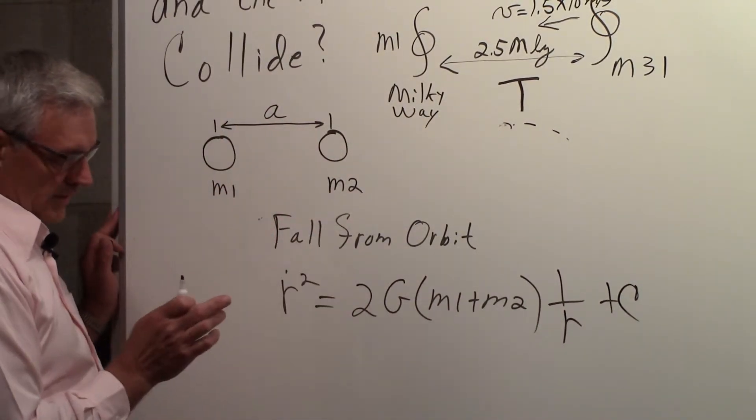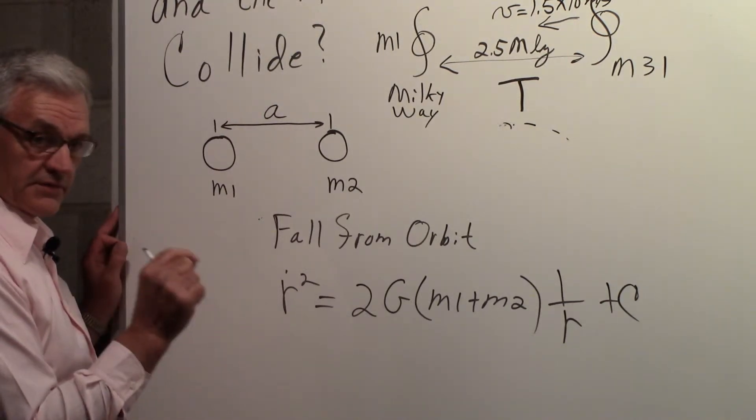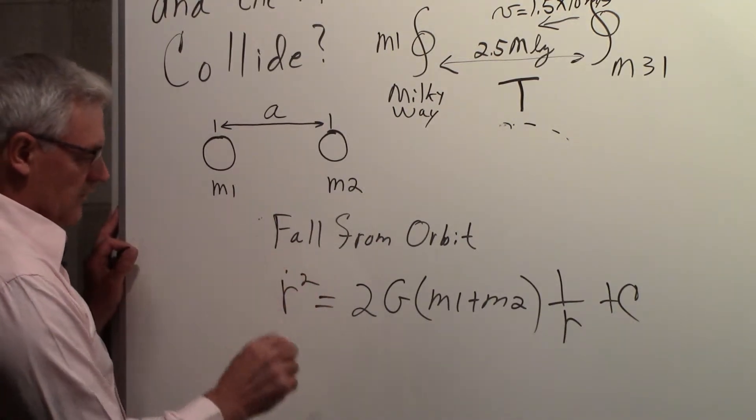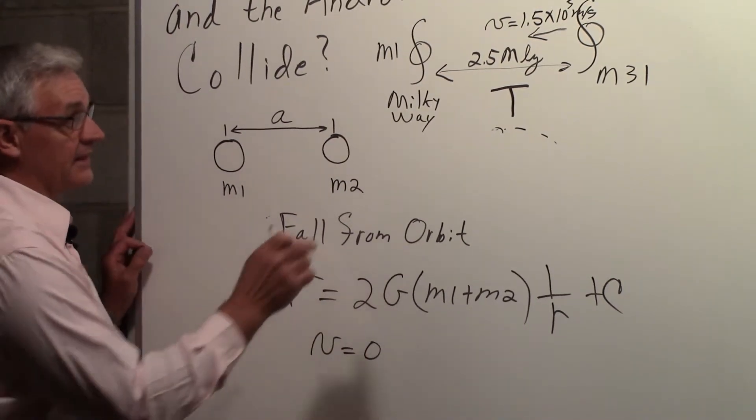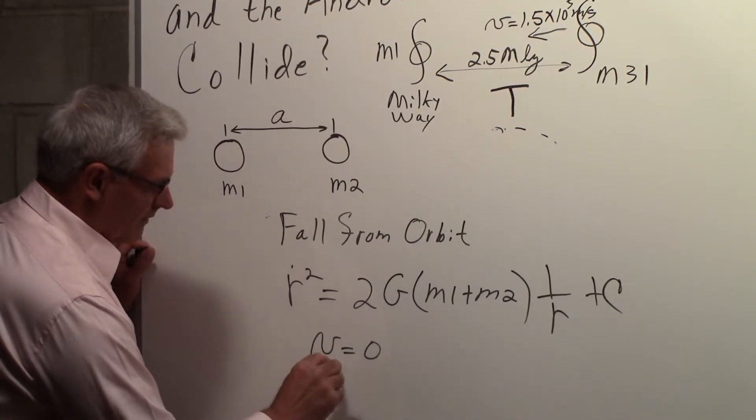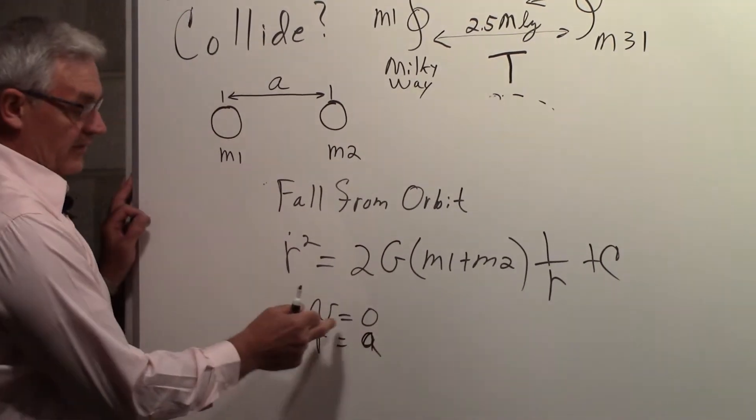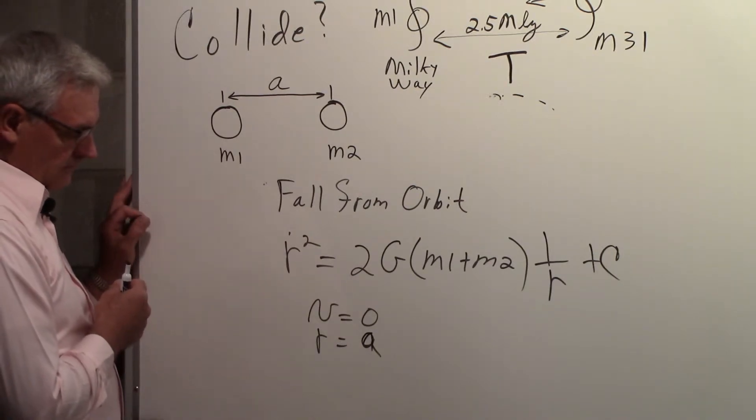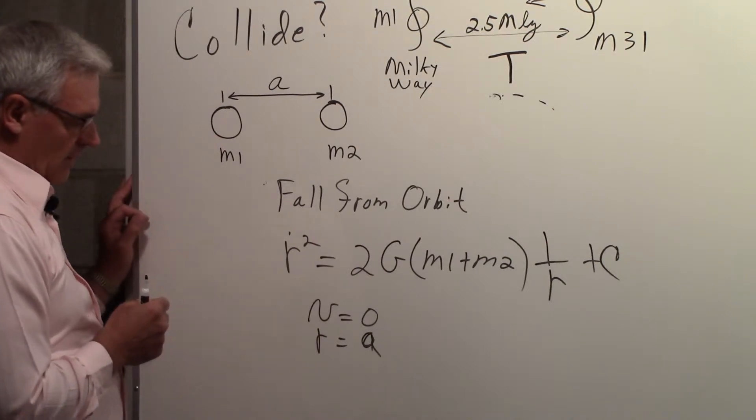R dot squared is equal to 2G M1 plus M2 times 1 over R plus an integration constant. Now that earlier expression that I had for T, which didn't give us the right number for the time of collision, that was for an initial condition of the velocity being zero, and that's not the case for what we want to look at. And R for that case was equal to zero. So they were the initial conditions: the velocity of the bodies was zero and the distance between them was starting out at a distance R equals A.